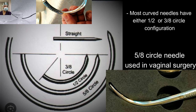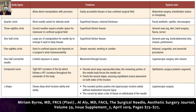The circular needle can be half circle, three-eighths circle, or five-eighths circle, depending on how much of the circumference you are using. Most curved needles used in general surgery or GI surgery will be half circle or three-eighths circle configuration. The larger configuration like five-eighths are used basically in closed cavities like in hemorrhoidectomy, vaginal surgery, or urogenital surgeries.